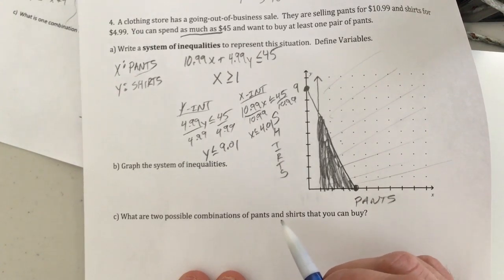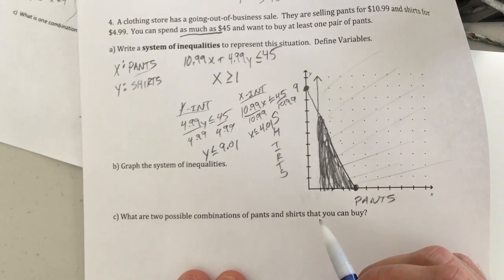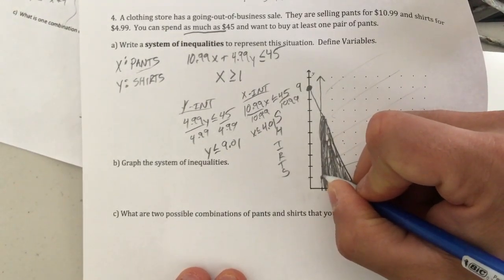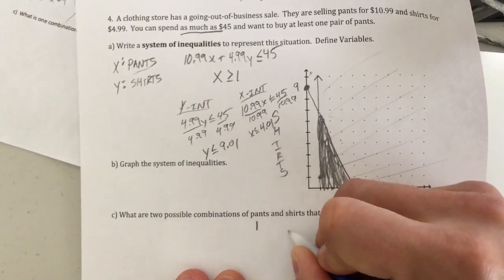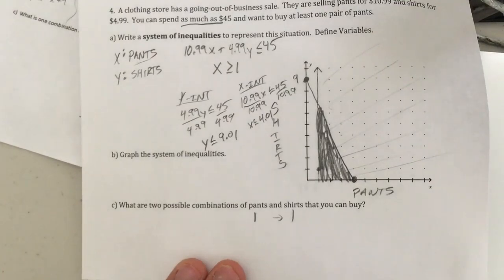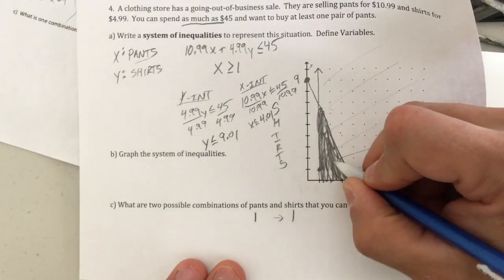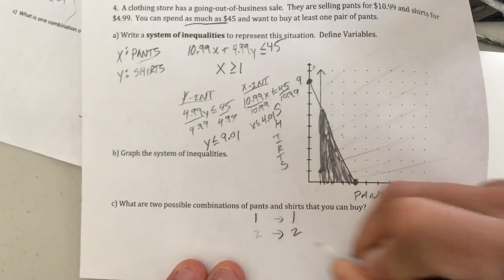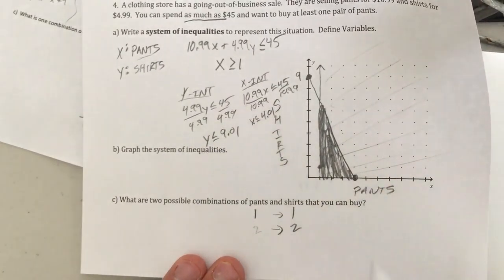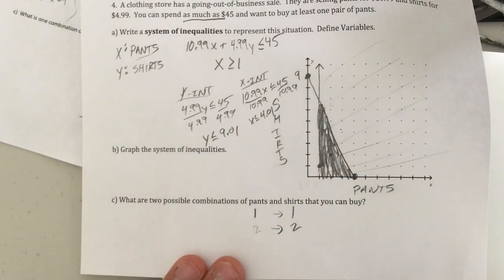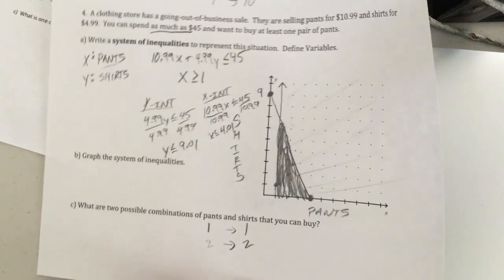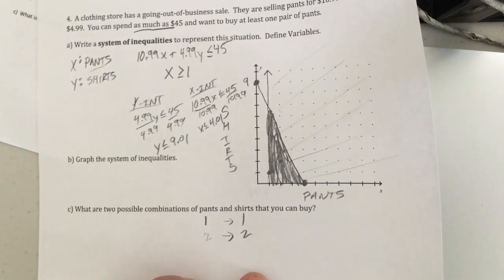Any point that's in that shaded region is good to go. What are two possible combinations of pants and shirts that you could buy? I mean, in theory, you could buy one pair of pants and one shirt. In theory, you could also buy two pairs of pants and two shirts. That would work too, because that also is in our shaded region. I know it's not easy guys and gals. That's why we're continuing to work at it. I hope this helps. Talk to you soon. Peace.